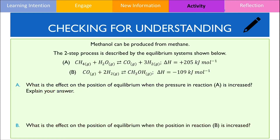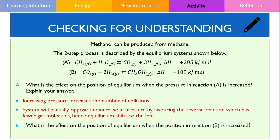The second question is made up of two parts. Part A asks: what is the effect on the position of equilibrium when the pressure in reaction A is increased? If we are increasing the pressure of reaction A, the system will partially oppose the increase in collisions by favouring the reverse reaction since it produces the lowest number of molecules, hence equilibrium will shift to the left. If the pressure is increased for reaction B, the system will partially oppose by favouring the forward reaction as it produces the lowest number of molecules, hence equilibrium will shift to the right.